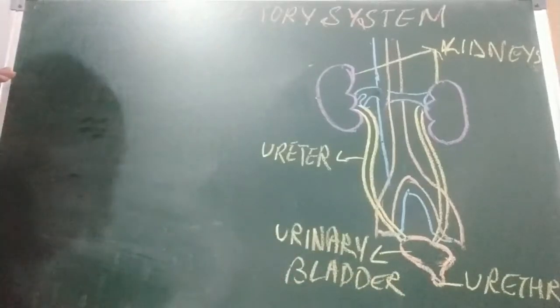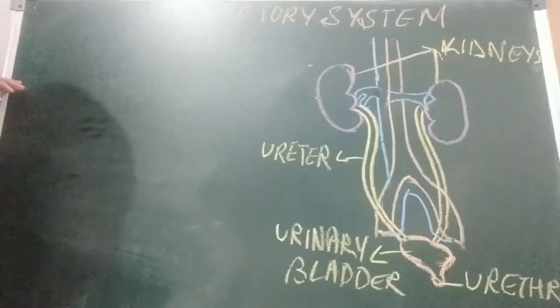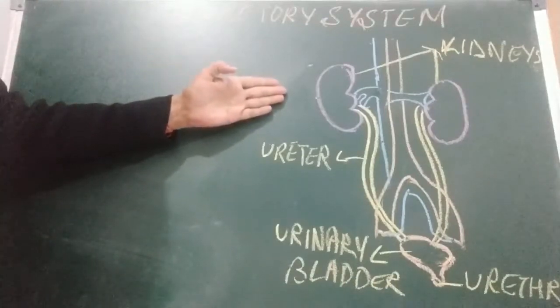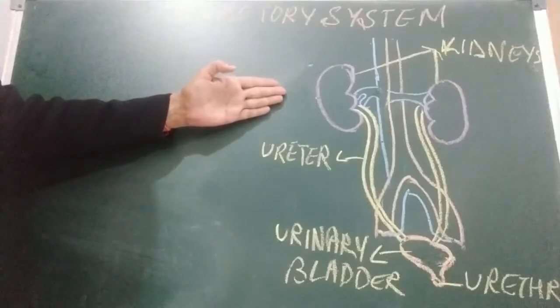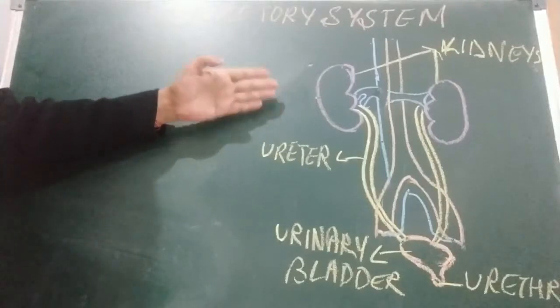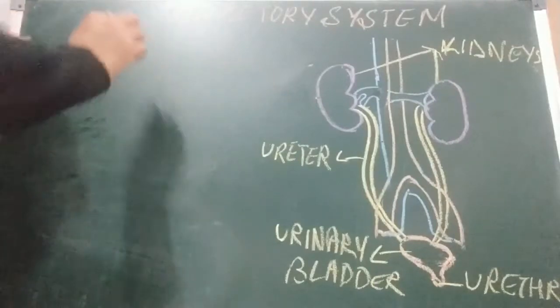Kidneys are the main excretory organs. As you can see in the picture, they help in eliminating urea, excess water, and waste salts from our body.